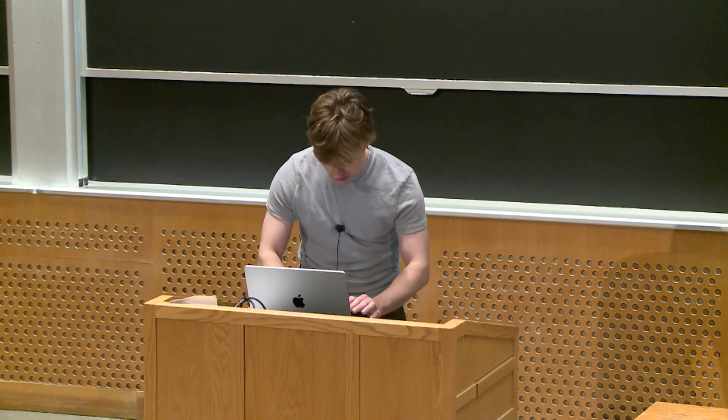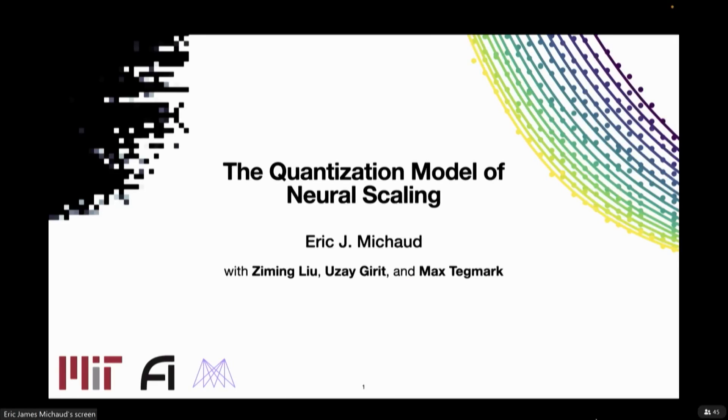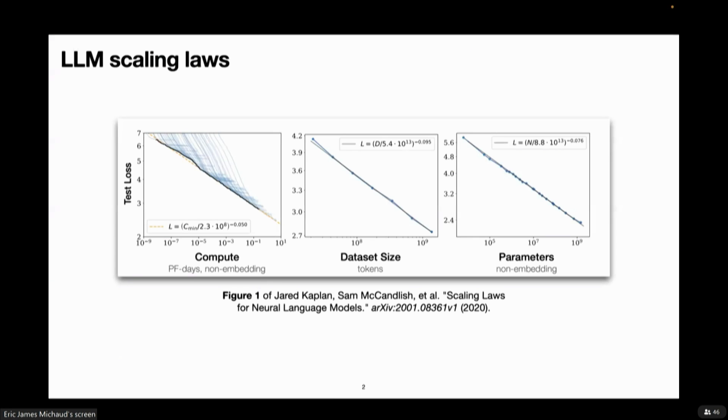And I'll be talking today just briefly about this recent preprint from our group, The Quantization Model of Neural Scaling. In this paper we were interested in trying to understand how can we think about the difference between what large neural networks and small neural networks learn. And just more generally, what effect does scaling have on what neural networks learn. And there's this kind of remarkable predictability to this difference between small and large neural networks.